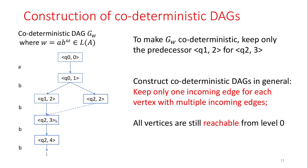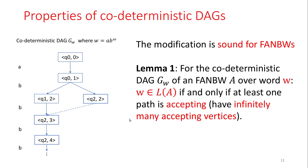To make it codeterministic, we can keep only one predecessor, Q2-2, for Q2-3. To construct a codeterministic DAG in general, we walk through all the vertices at each level and keep only one incoming edge for each vertex. After this modification, all vertices are still reachable from level 0. Note that this modification is designed for finitely ambiguous Büchi Automata. We prove that for the codeterministic DAG G_w over the word w, w is accepted by A if and only if at least one path is accepted. You can see in this codeterministic DAG there is one accepting path.